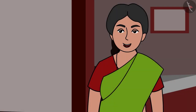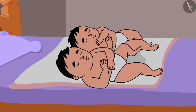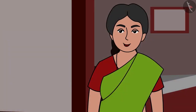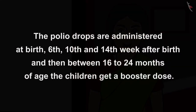Mummy, you do not be scared. My children Chotu and Mona are safe. The doctor has already started their polio drops and vaccinations. The polio drops are administered at birth, 6th, 10th and 14th week after birth, and then between 16 to 24 months of age, the children get a booster dose.